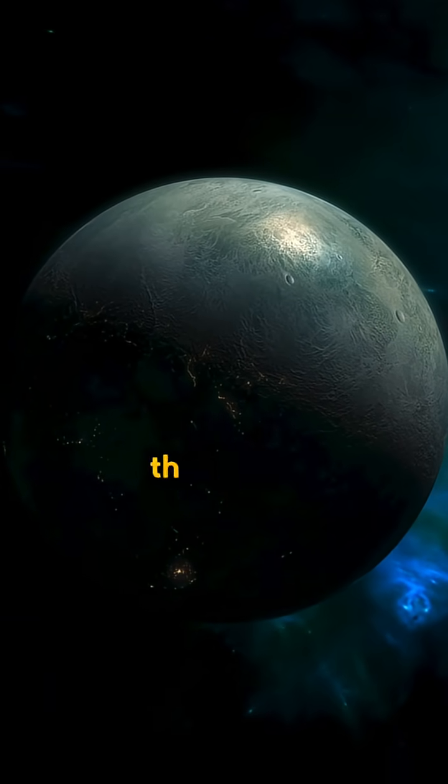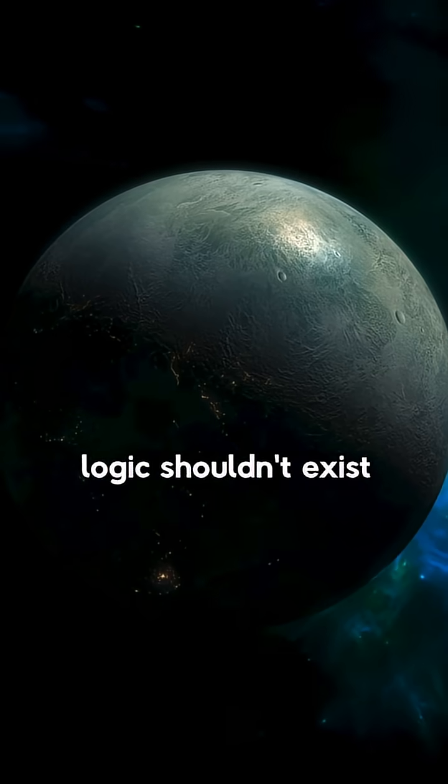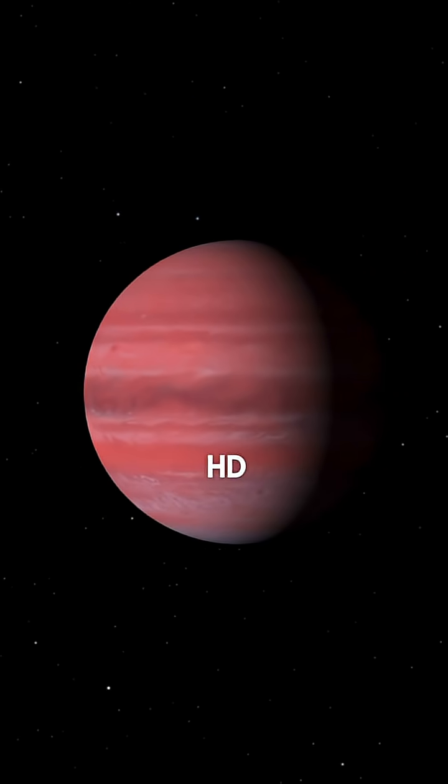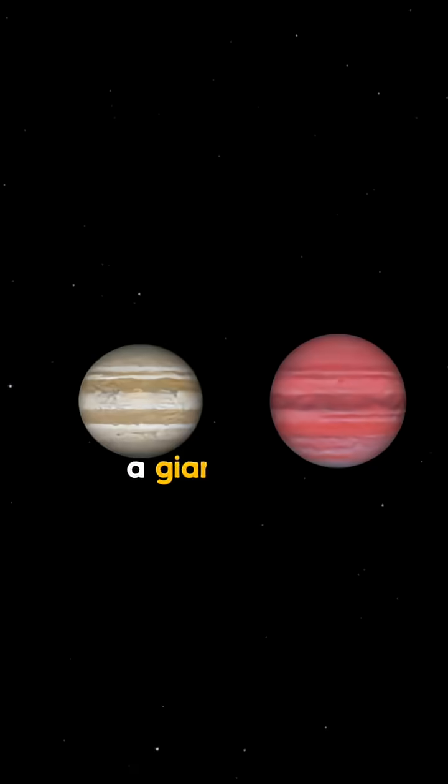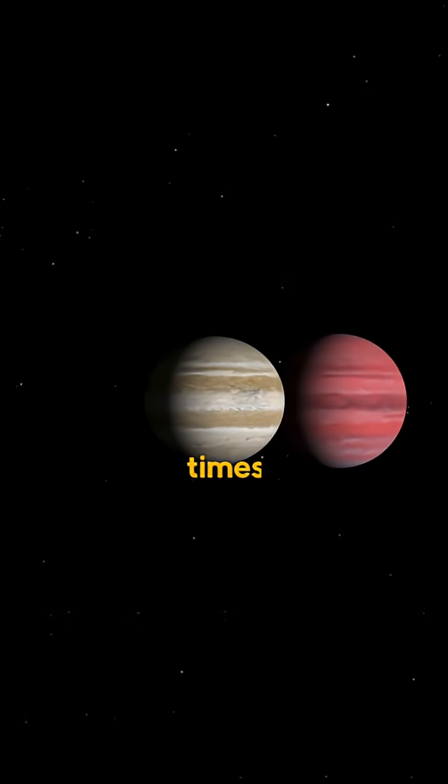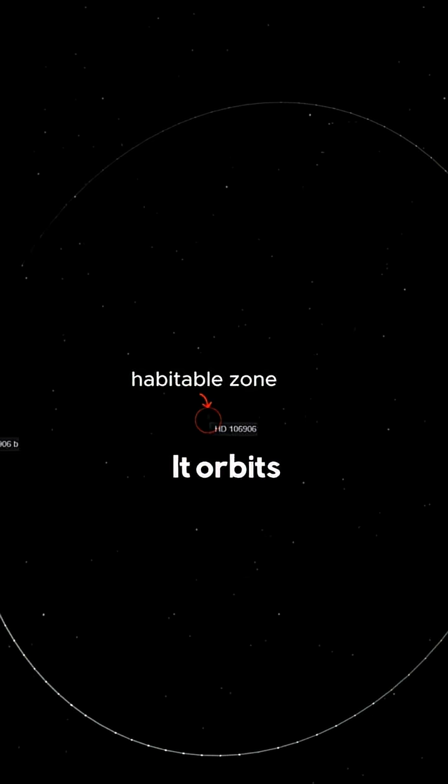What if I told you there's a planet that by all logic shouldn't exist? Astronomers discovered HD 106906b, a giant world with about 11 times the mass of Jupiter. It orbits its star from over 20 billion miles away.